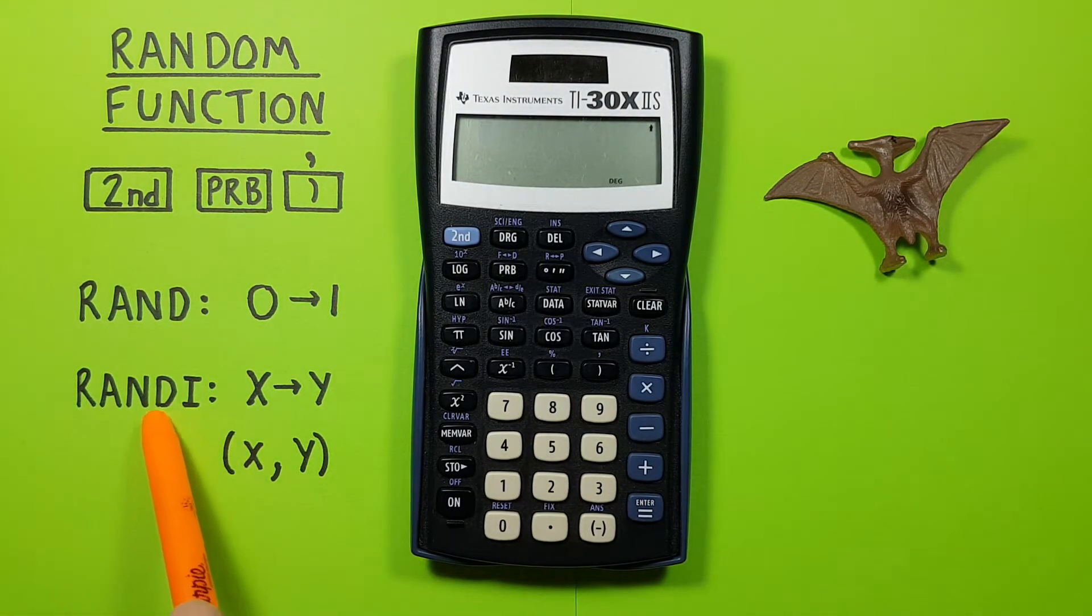Our other option is RANDI, or random integer, which lets us tell our calculator two values and it'll give us a number in between them.